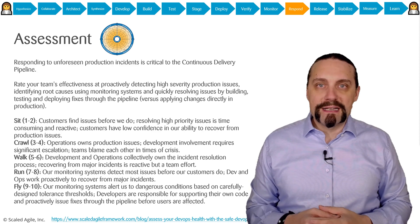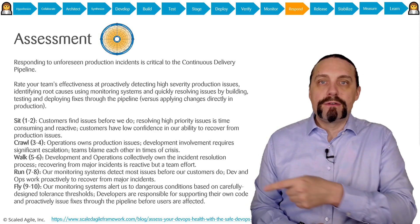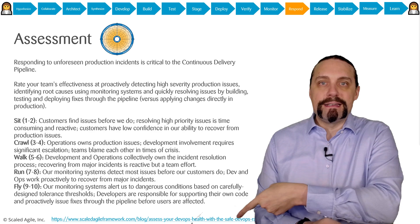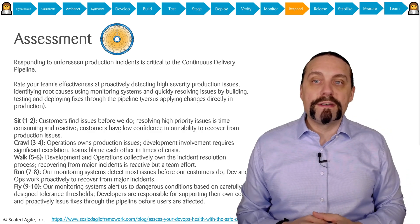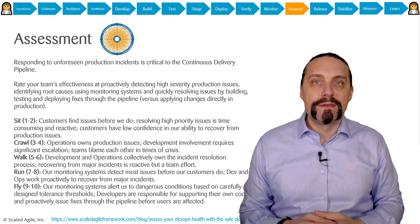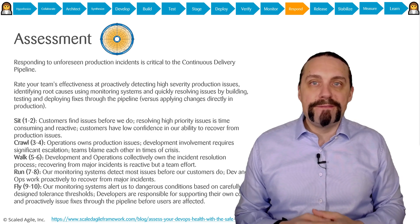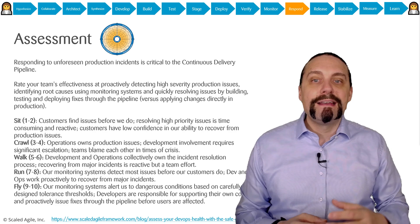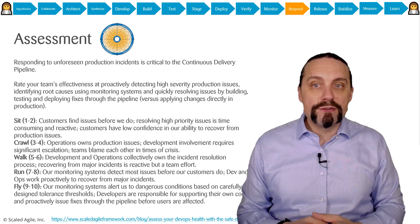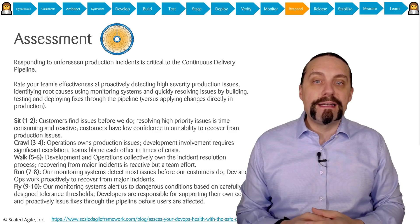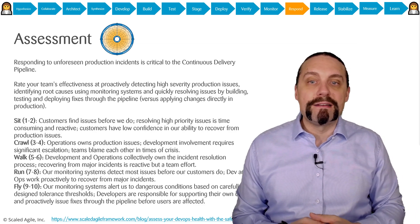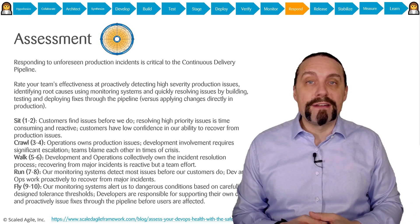The SAFe for DevOps Health Radar is an assessment — you can download it under the link shown down here; it is an Excel file. Responding to unforeseen production incidents is critical to the continuous delivery pipeline. Please rate your team's effectiveness at proactively detecting high-severity production issues, identifying root causes using monitoring systems, and quickly resolving issues by building, testing, and deploying fixes through the pipeline versus applying changes directly in production.